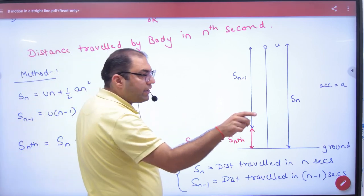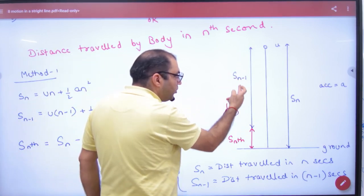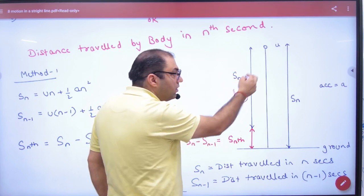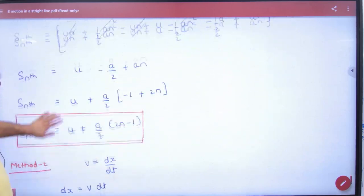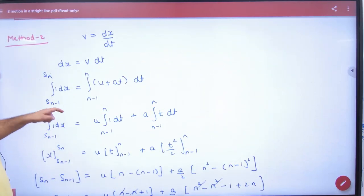What will be the distance x? When the body is here, the distance is S_n-1. When the body is here, the distance is S_n. Look at the limits I have - S_n-1 to S_n. That's it.